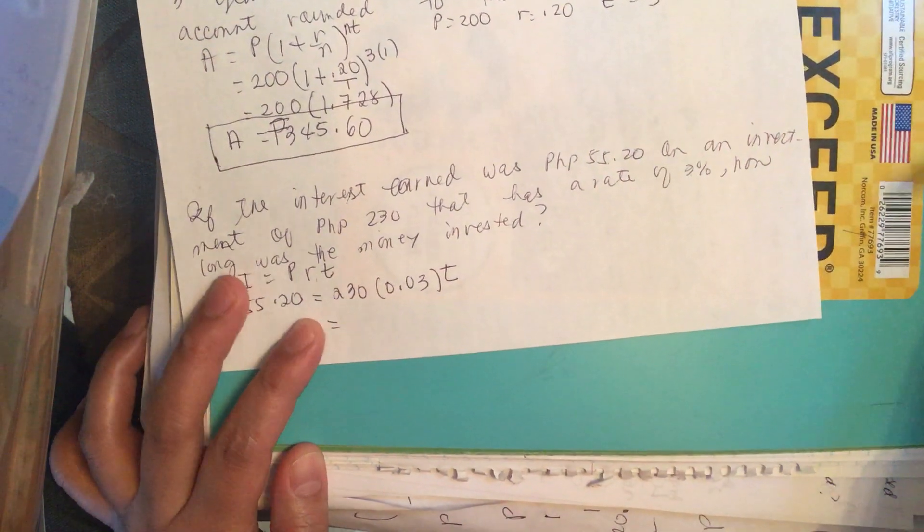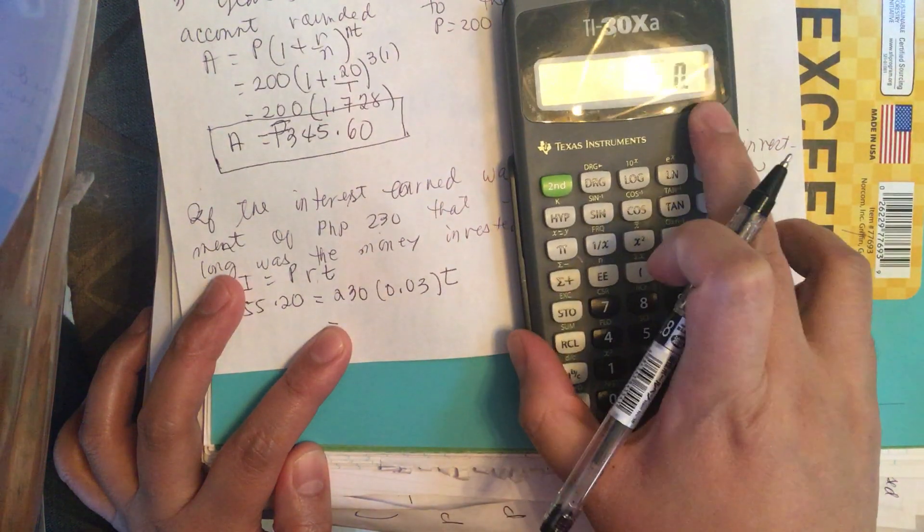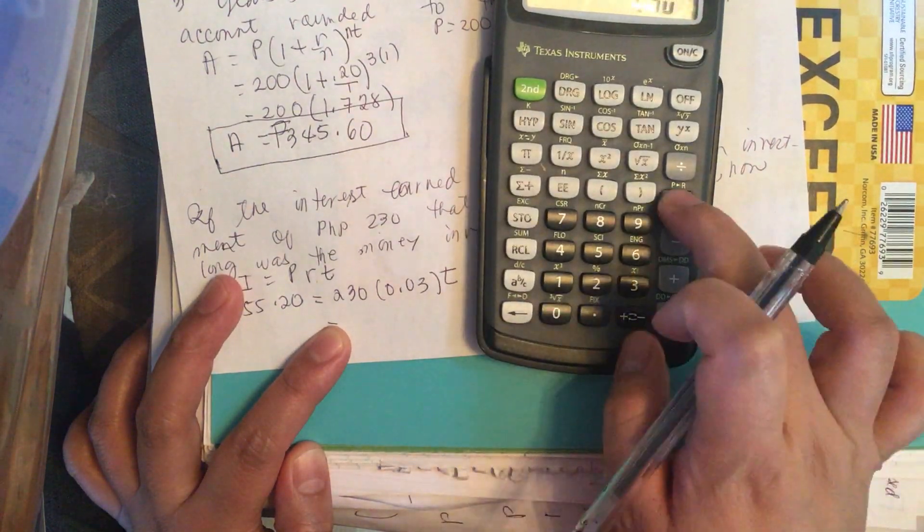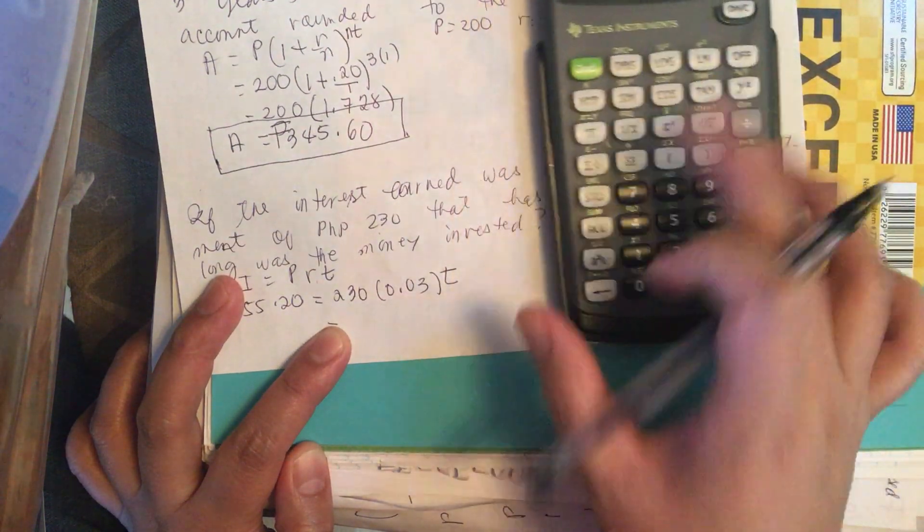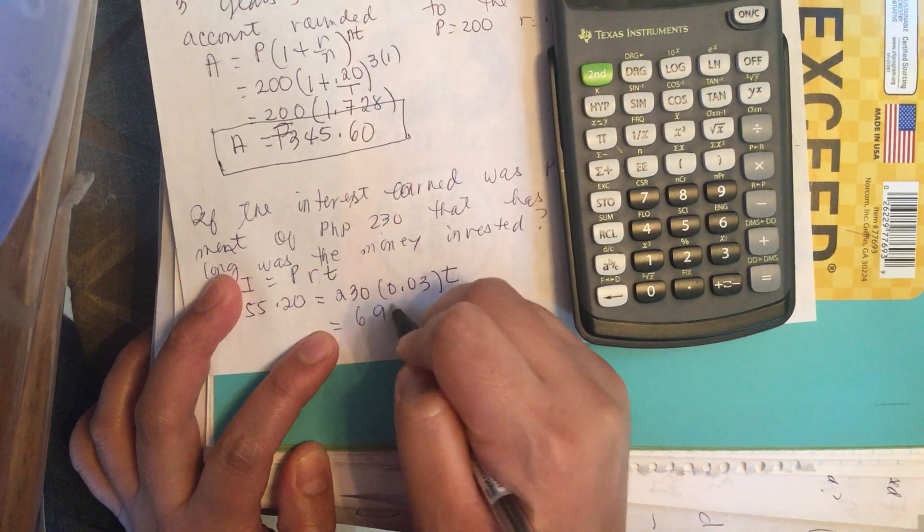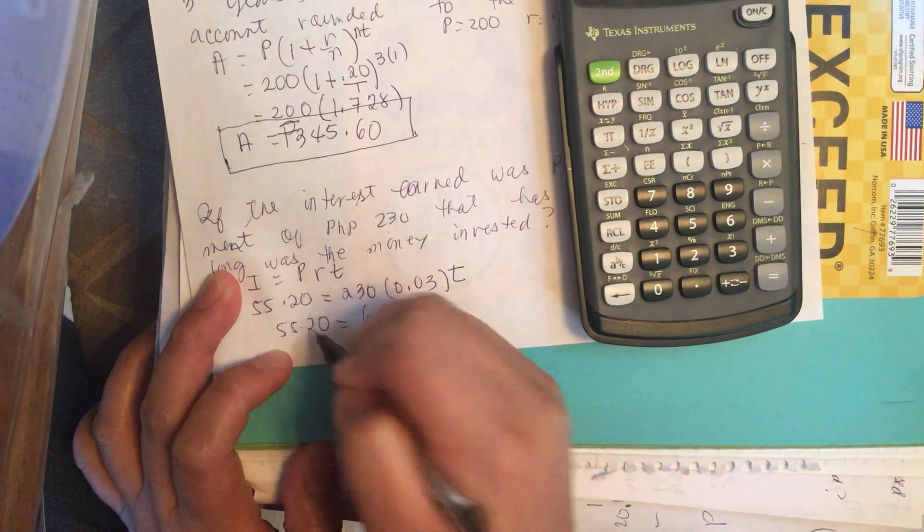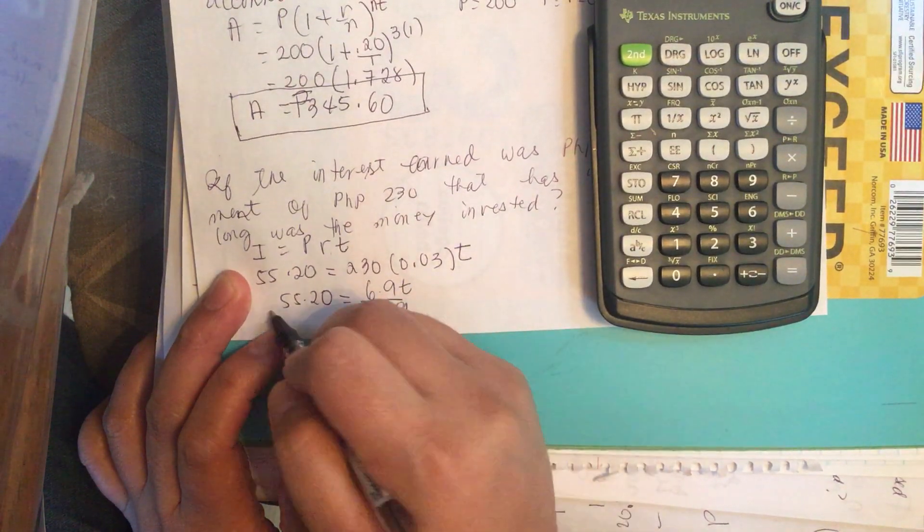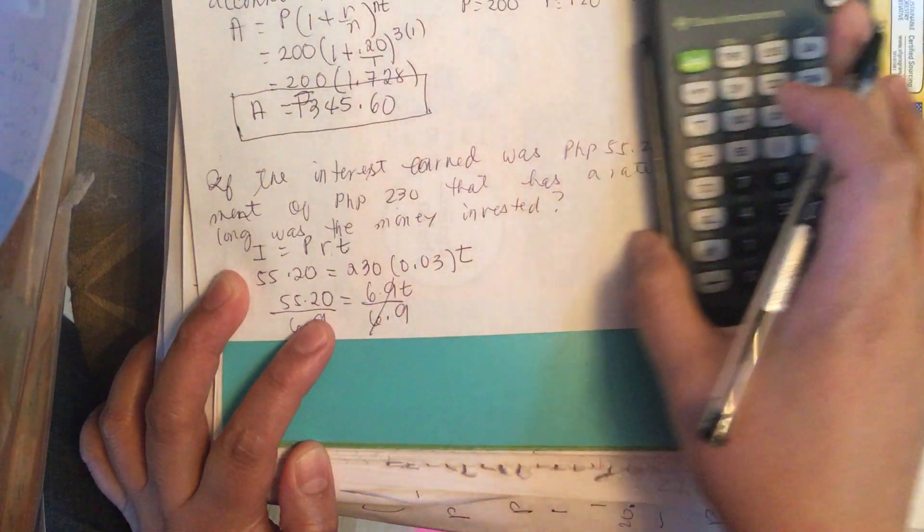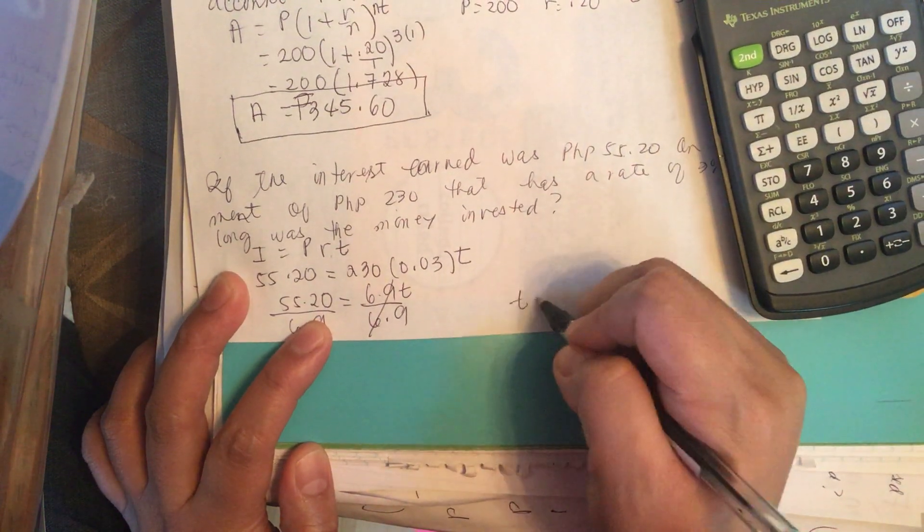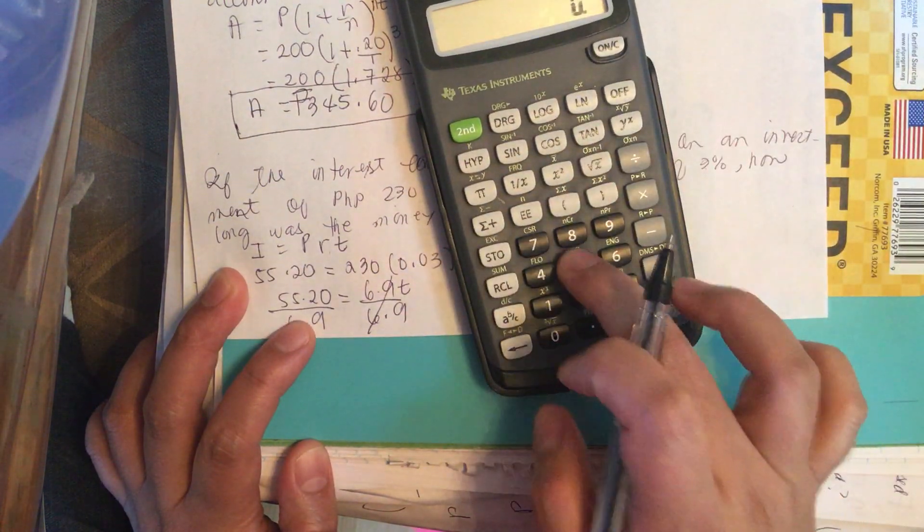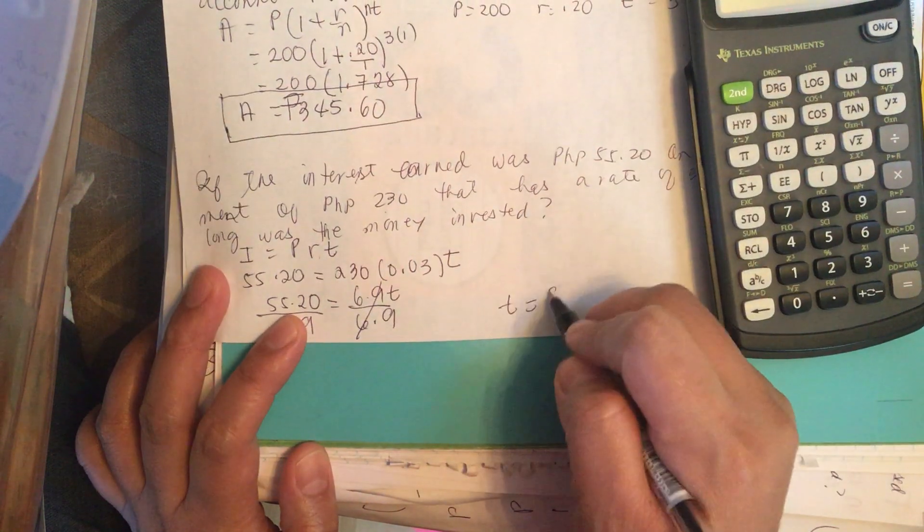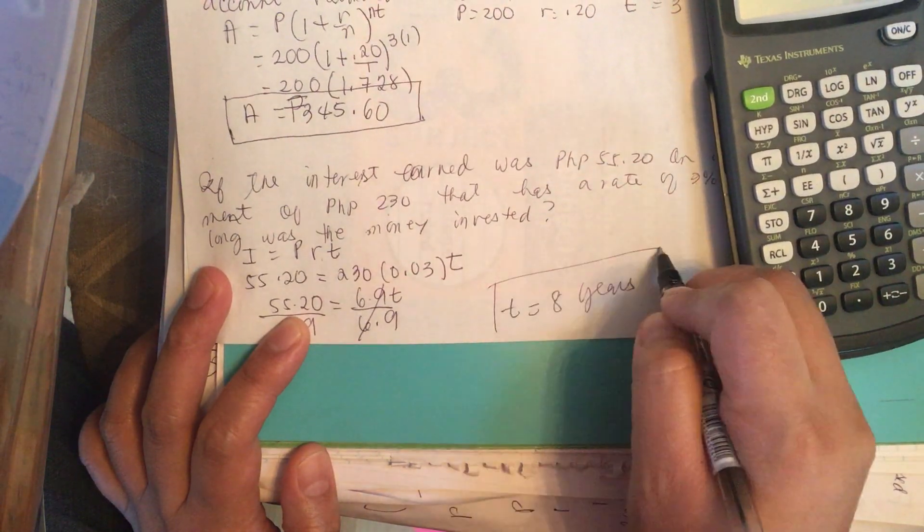We have 230 times 0.03 is equal to 6.9T. And then we divide both sides by 6.9. So we have T is equal to 8 years.